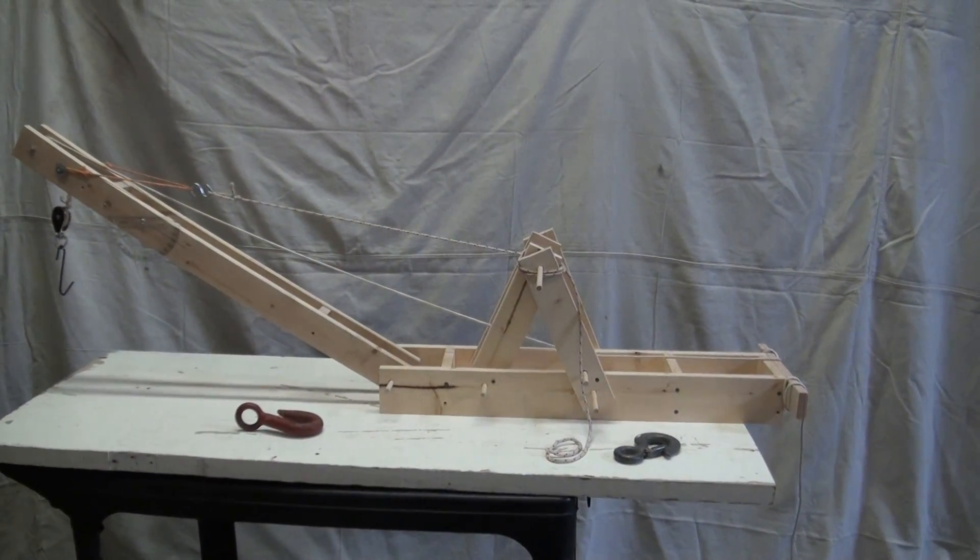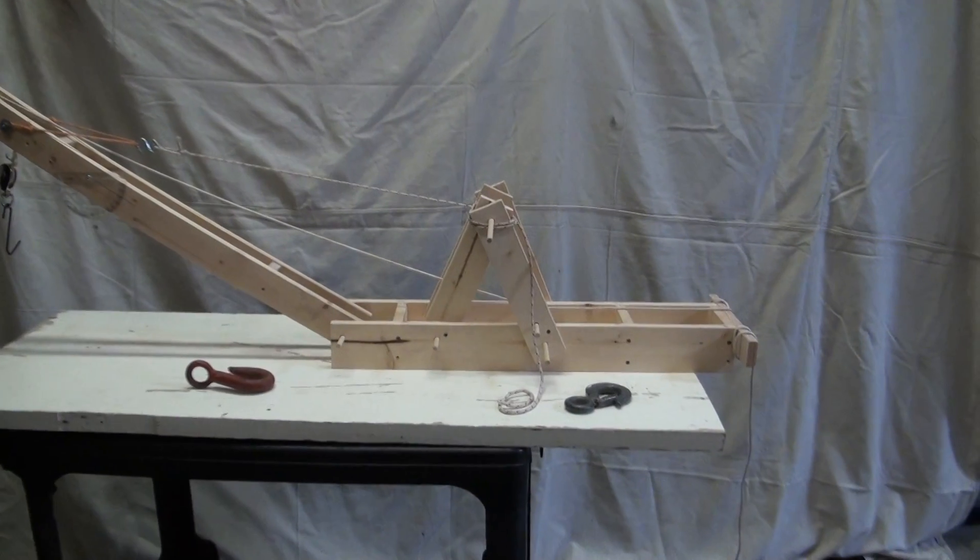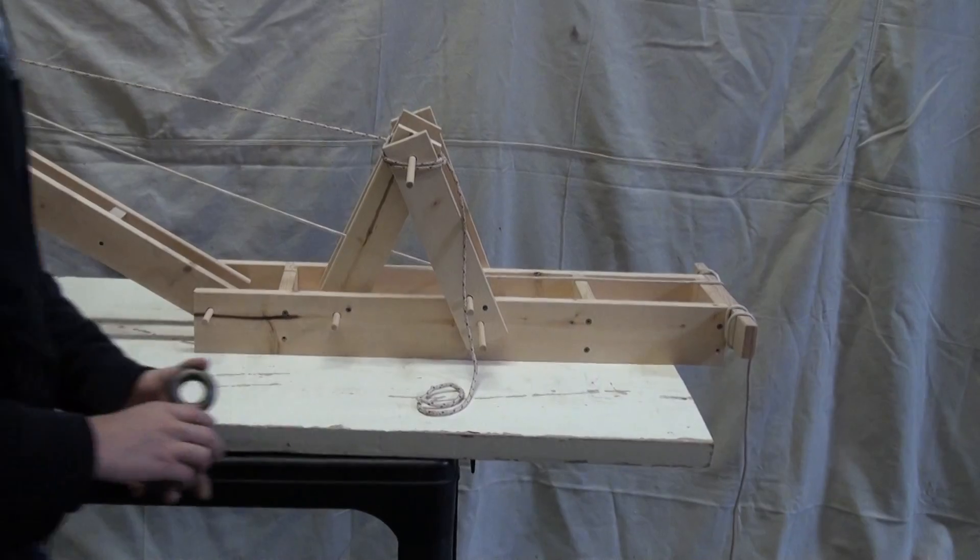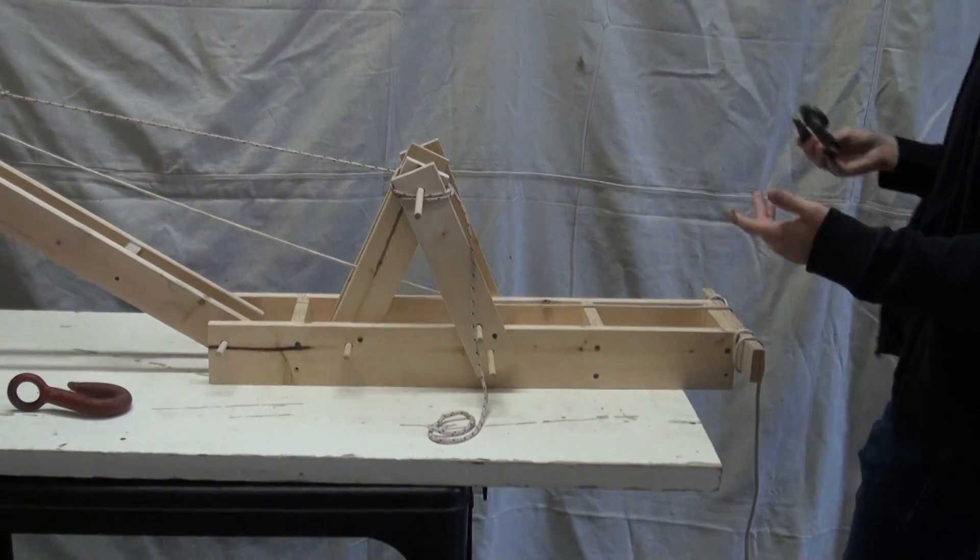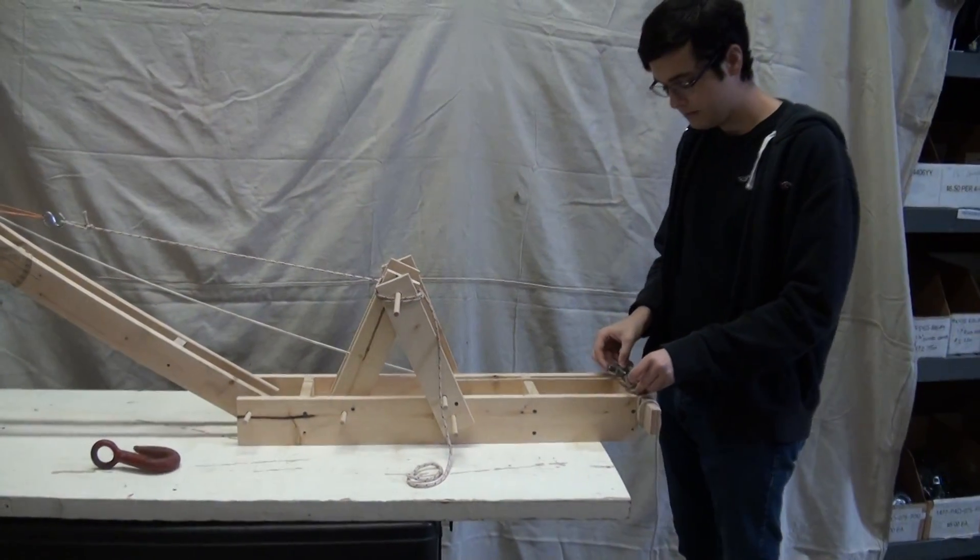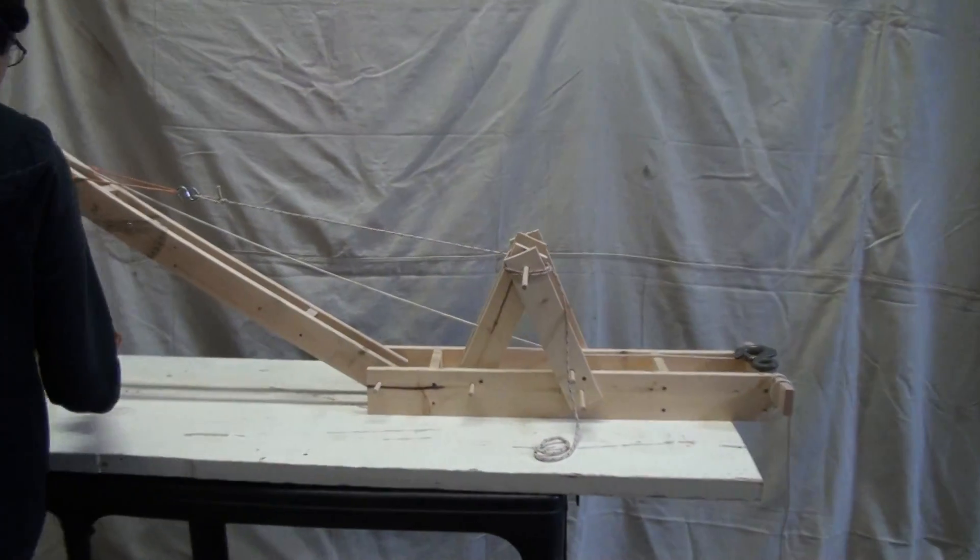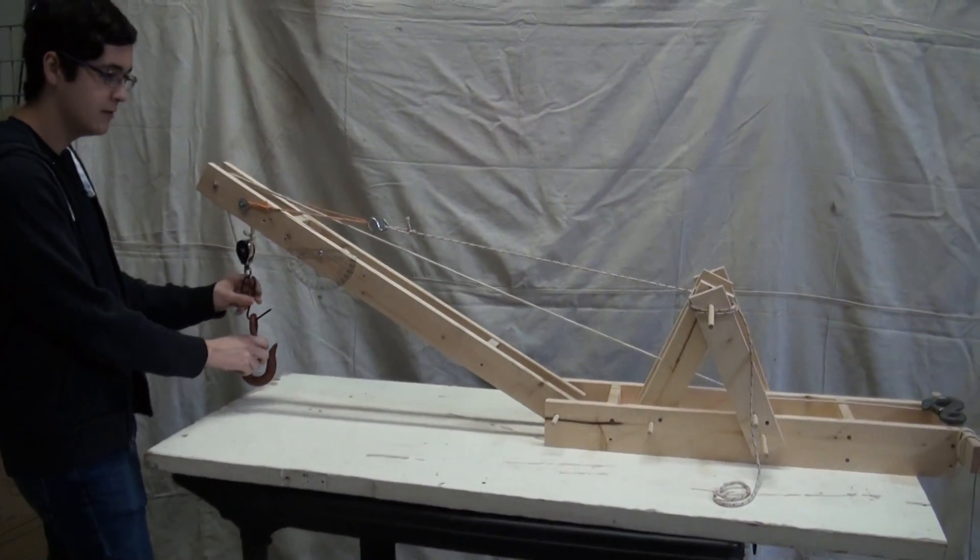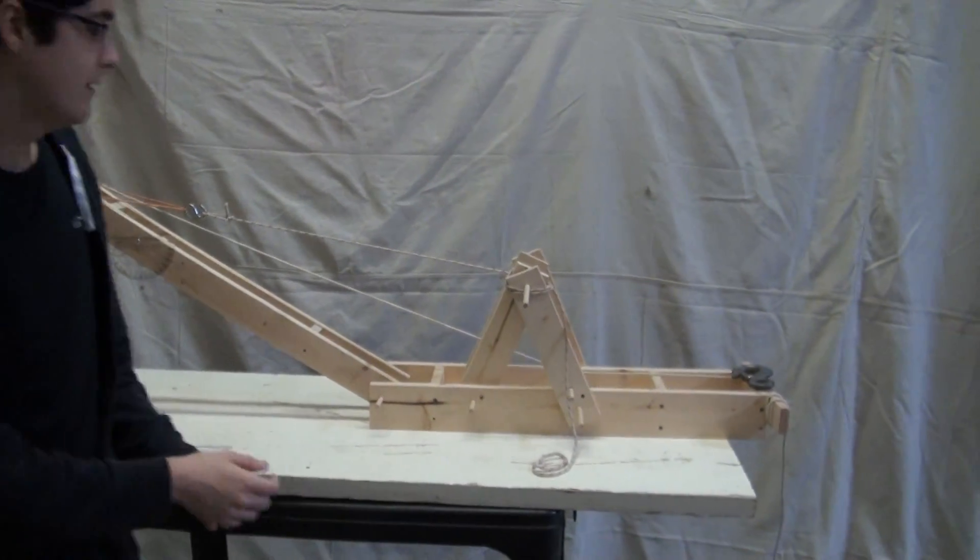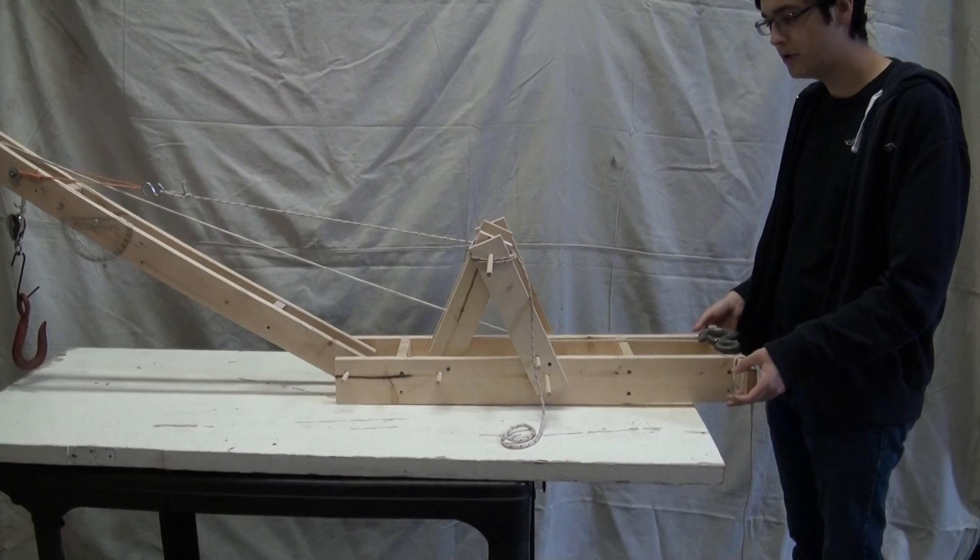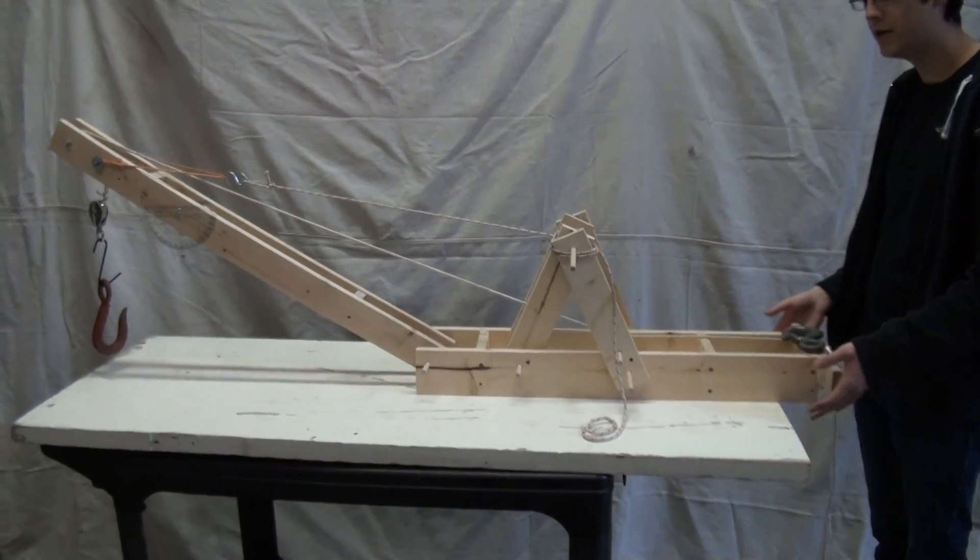So if we have something that weighs about a pound, which is that hook there, just about a pound, and if we put it all the way on the end, which is 30 inches away, one times 30, we've got 30 inch pounds. Let's see, this should be just about in balance. Look at that. The back end is pretty easy to tip over. They're very close.